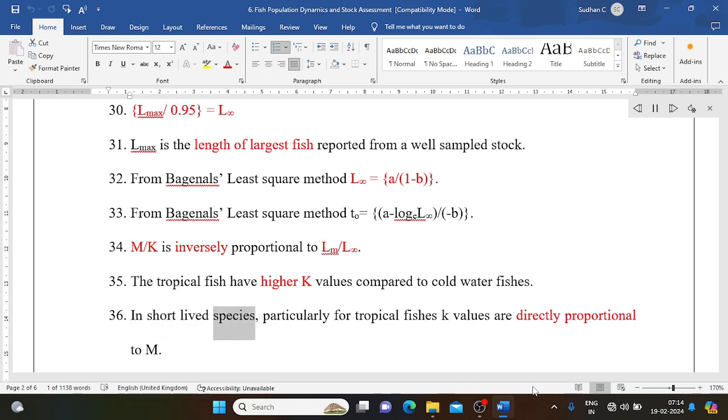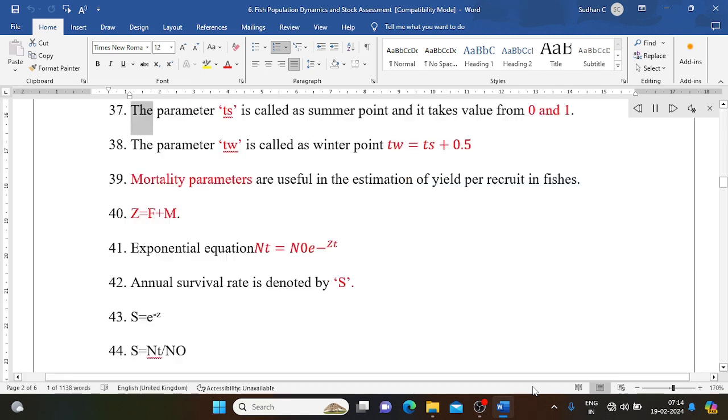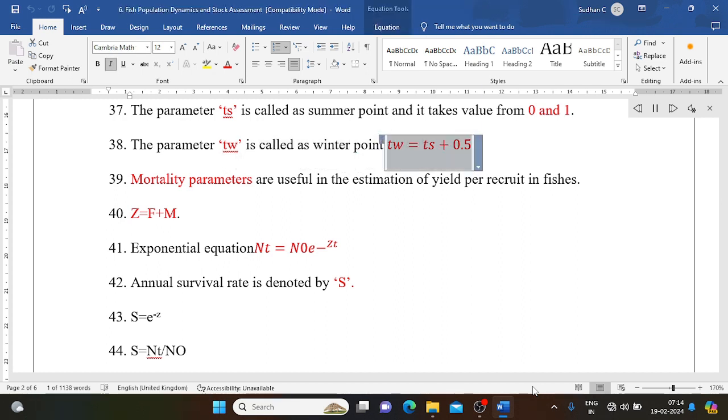In short-lived species, particularly for tropical fishes, K values are directly proportional to M. The parameter ts is called as summer point and it takes value from 0 and 1. The parameter tw is called as winter point. Tw equals ts plus 0.5.